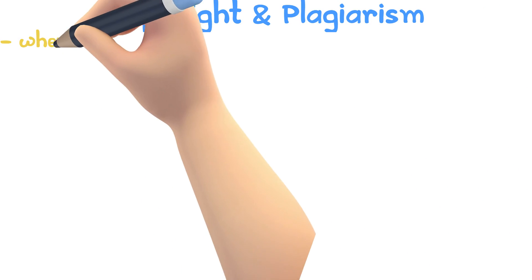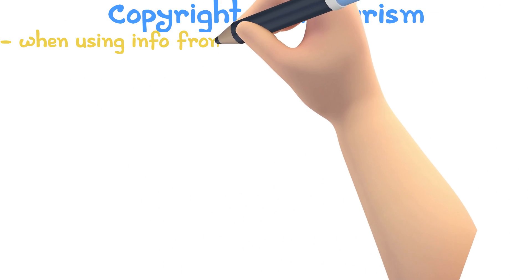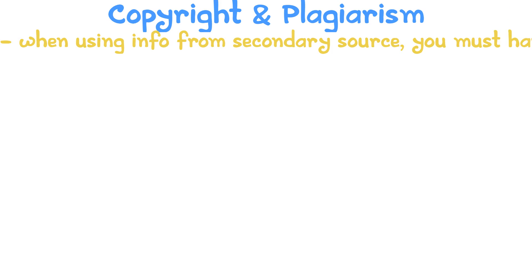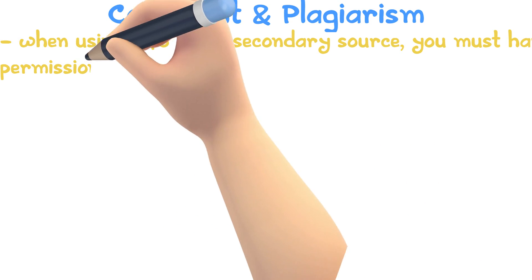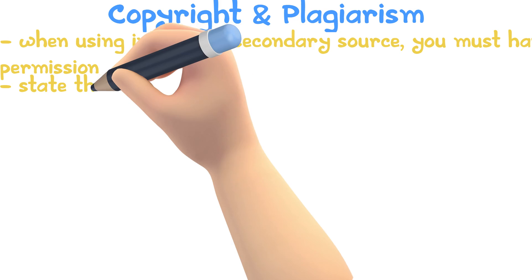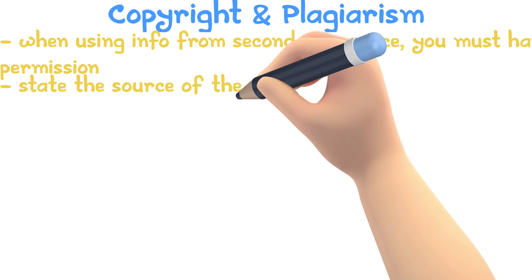Copyright and plagiarism: when using information from secondary sources, you must make sure you have permission to use it. Sometimes you might have to state the source of the information.